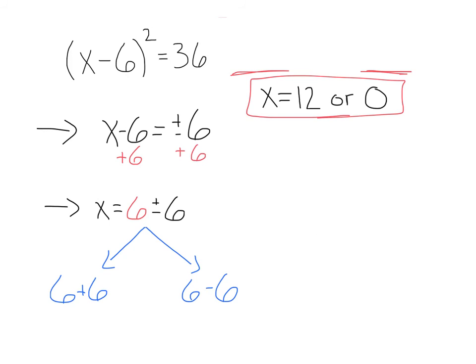It's never a bad idea, especially when things get a little messy, to check back with the original equation. That would be 12 minus 6 — 6 squared — equals 36. Good. Or 0 minus 6 — negative 6 squared — also 36. So we are golden with these answers.